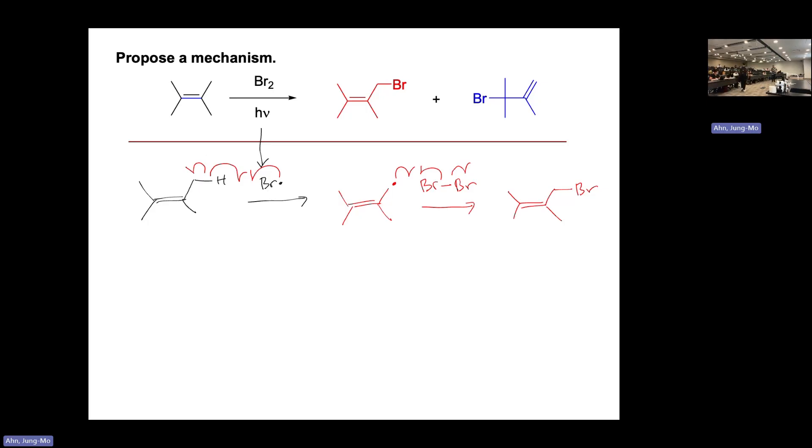The question is how that second product forms. So that has to do with this allylic radical. When the double bond is next to the radical, they're trying to make a resonance stabilization.